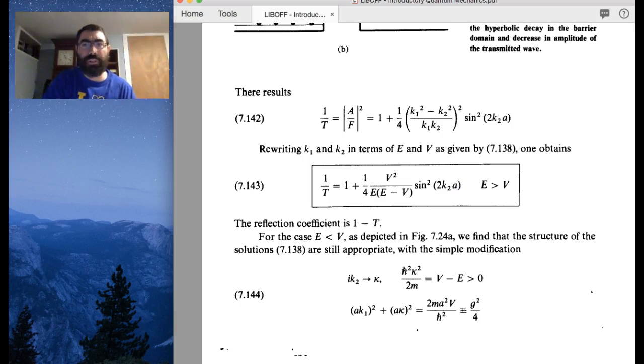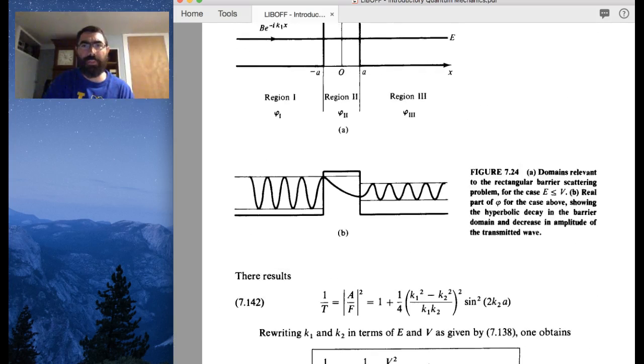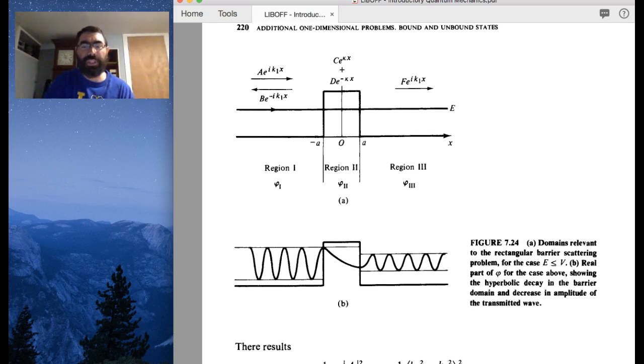And this is the case where the total energy is greater than the potential height. But now, let's consider the case where the energy E is now below the value of V.